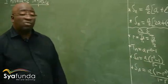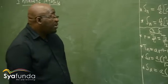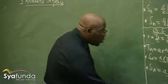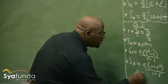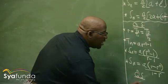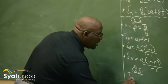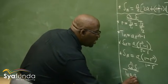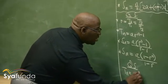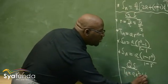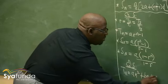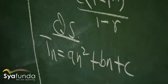Then the last one will be the quadratic sequence. It deals with T_n equals a·n squared plus b·n plus c. So it covers only that section.